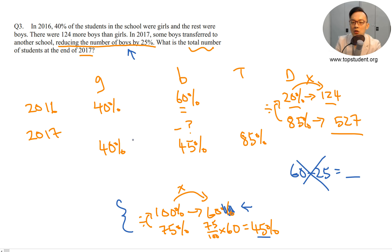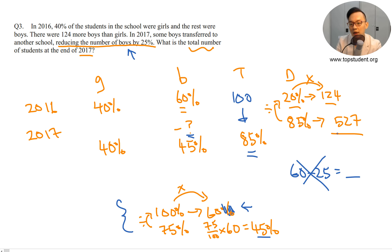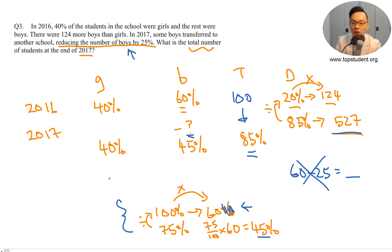Girls remain at 40%, so total is now 85%. The question asks for the total number of students at end of 2017. I know 20% is 124, so now find 85%: it's 85 divided by 20 times 124, and the answer is 527 students. Make sure you can do this yourself — understand where your 100%, 50%, and 25% are, and use the divide-times structure yourself.